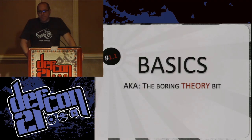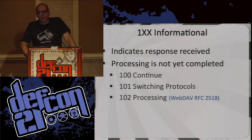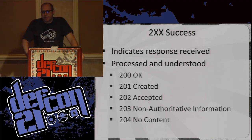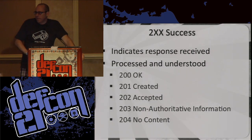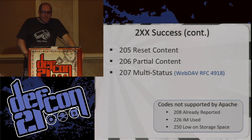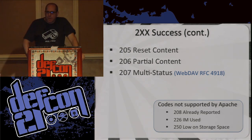Let's go through the basic stuff — this is the theory bit. You get the 100 informational codes like 100 continue, switch protocols, processing — things you don't get to see very much. Moving into the 200 stuff, it means it worked. You're getting a 200 OK which is what most of the web returns. You also get weird stuff like 204 no content. There's also some interesting stuff not supported by Apache, like low on storage space — I've never seen that returned by a server but I'd really like it.